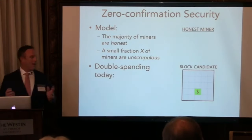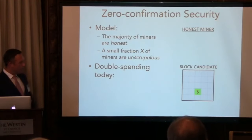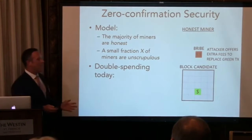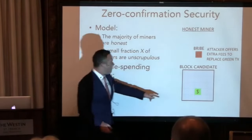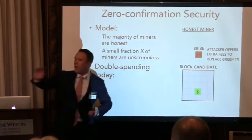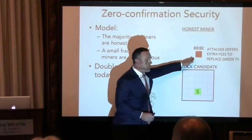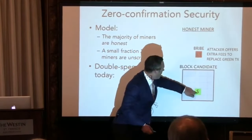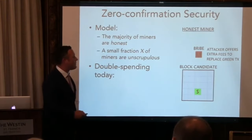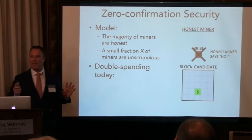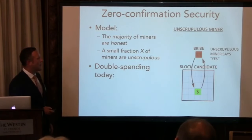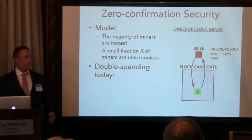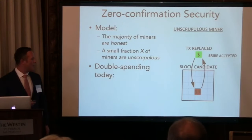So double-spending today under this framework: imagine a scammer walks into a coffee store and pays for his latte with a transaction. He takes his latte, walks down the street, and broadcasts a double-spending transaction offering a bit more in fees to bribe miners to replace the original transaction with the new one — ending up with the coffee for free. An honest miner says no, that's against the protocol. An unscrupulous miner says: I can replace the green one with the red one, it doesn't cost me anything, I might earn a bit more in transaction fees, so I'll do it. The transaction is replaced and the bribe is accepted.